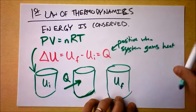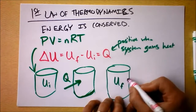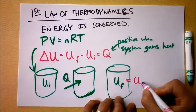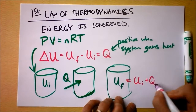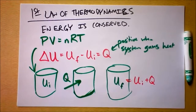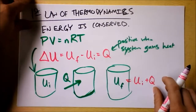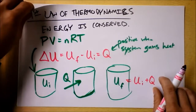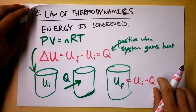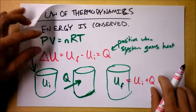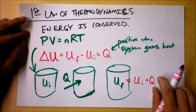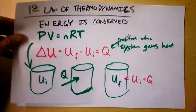U final is U initial plus the heat that's gone into the gas. And there's something else that's interesting — this is actually the whole point of why this is a useful study: a gas can do work.